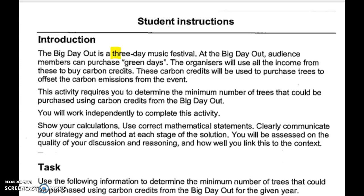The Big Day Out is a three-day music festival. Audience members can buy green days, and the organizers are going to use all of the money from those to buy carbon credits. Carbon credits are used to buy trees to offset the carbon emissions from the event. It's a bit like at a fair where you win tickets and then use them to claim a prize — that's kind of how carbon credits work.